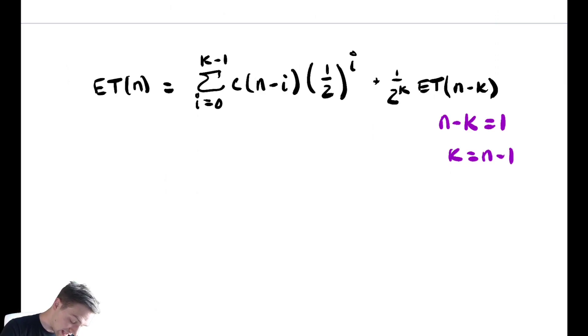Let's use that. ET(n) equals the sum from i equals 0 to n-1-1, that's n-2, c(n-i), 1/2 to the i plus 1 over 2 to the k is 1 over 2 to the (n-1), times ET(1), ET(1) is just constant.